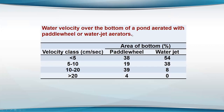The water velocity over the bottom of the pond with paddle wheel aerators shows that the area with less than five centimeters per second — where shrimp avoid due to sedimentation — is 38% of the pond with paddle wheels and 54% with jet aerators. The area where velocity is too high: 4% with paddle wheels but 39% with jet aerators. This is probably something we should pay better attention to in the future.